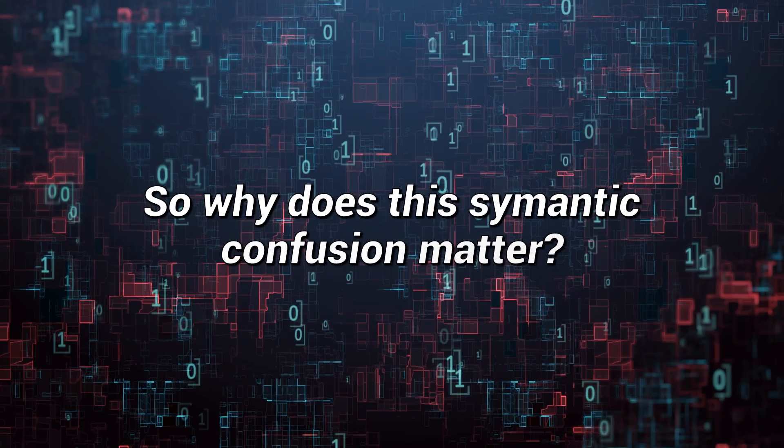So why does this semantic confusion matter? Why do we need to correct the record? First, if we maintain this artificial barrier, it divides our discipline into different camps and limits collaboration on really important questions. If we think of reduced form econometricians as just having clever research designs and structural econometricians as having complex computationally difficult models, that prevents the fruitful collaboration that can actually solve real-world problems.